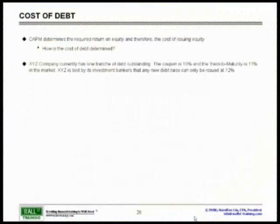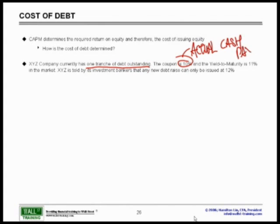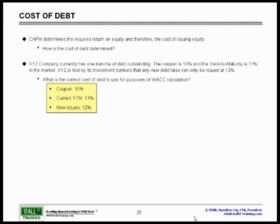Here what we'll say is the following. Currently, the assumption is that the company has one tranche of debt outstanding. The coupon rate is 10%, that's the actual cash pay. And the yield to maturity as determined by the market is 11%. XYZ firm is told by its investment bankers that any debt that they issue can only be issued at 12% due to the additional risk. So when we look at it from that perspective, what is the correct cost of debt to use for purpose of this WACC calculation? You have three options: coupon of 10, yield to maturity of 11, and the new issue at 12%. So what is the correct number to use?